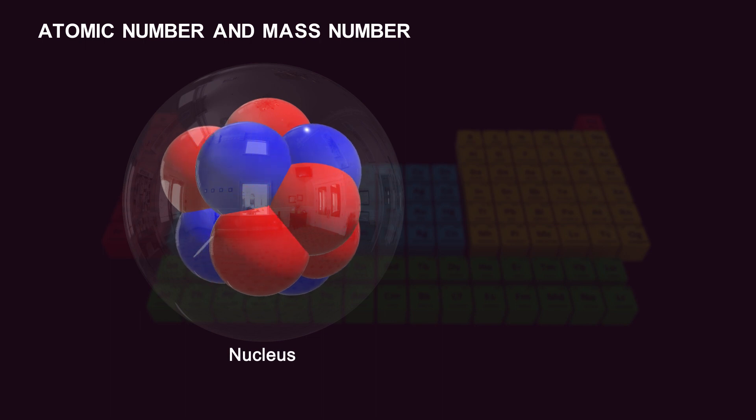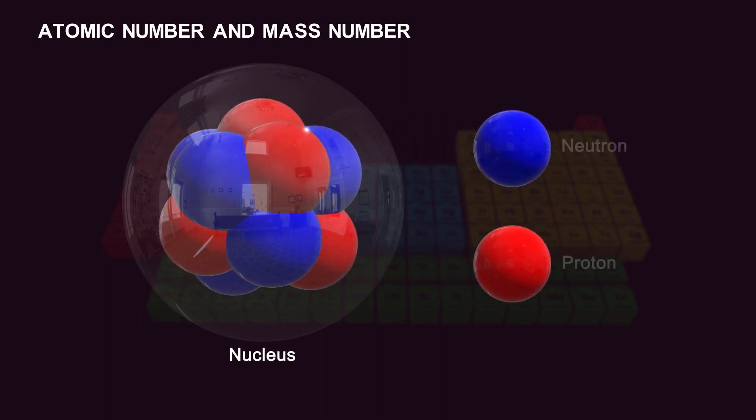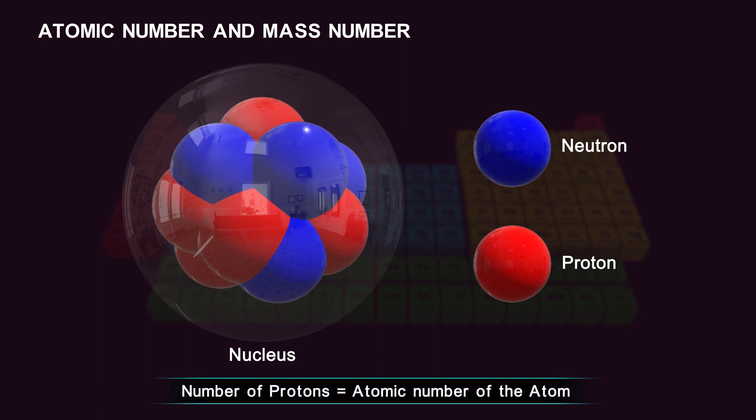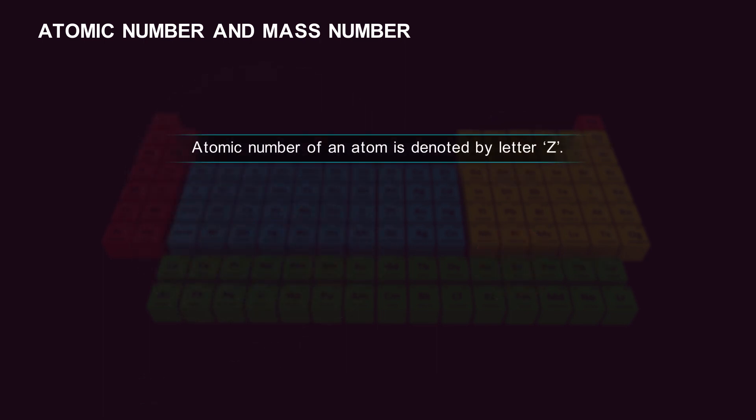The nucleus of an atom consists of protons and neutrons. The total number of protons in the nucleus determines the atomic number of the atom. Atomic number of an atom is denoted by letter Z.